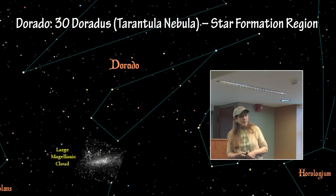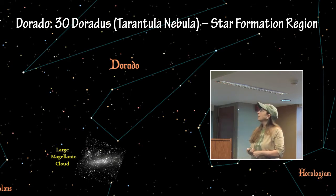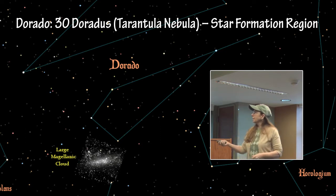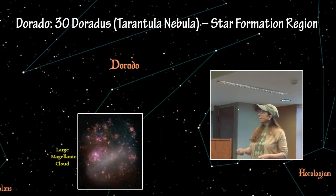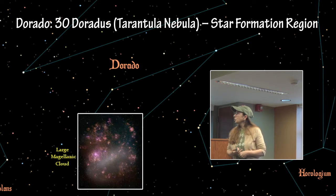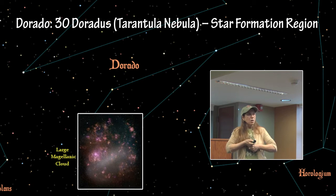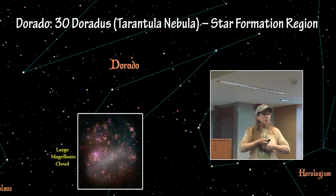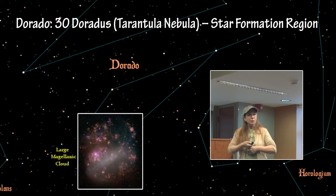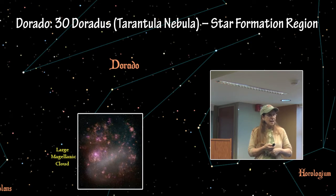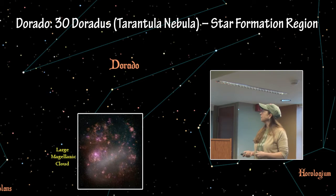In the constellation Dorado, which is in the southern hemisphere, we have 30 Doradus in the Large Magellanic Cloud, which is several thousand light years away. It is actually the most active star formation region in the entire local group of galaxies. It is on the very edge of this where Supernova 1987A was caught — the only supernova we have actually seen happen is at the edge of that particular area.